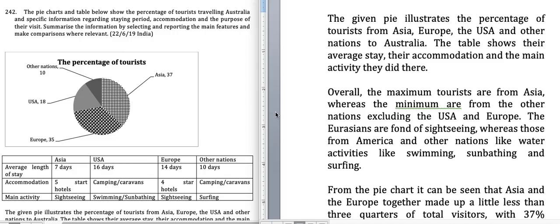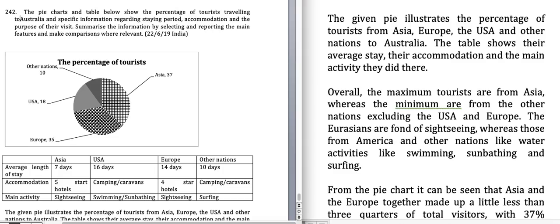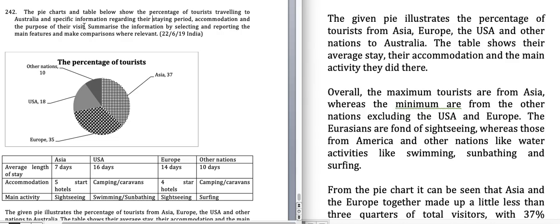Hello students, today I'm going to discuss a graph which has been seen on the 22nd of June 2019 in India, and some time ago it was reported by students in China. These graphs are being repeated. The pie charts and the table below show the percentage of tourists traveling to Australia and specific information regarding their staying period, accommodation and the purpose of their visit. Summarize the information by selecting and reporting the main features and make comparisons where relevant.